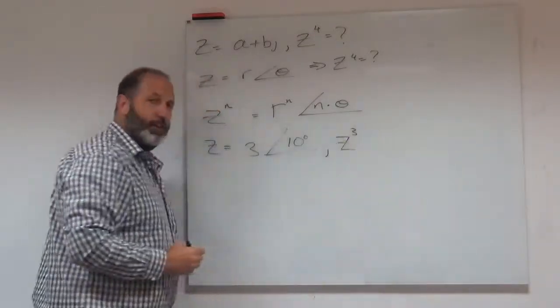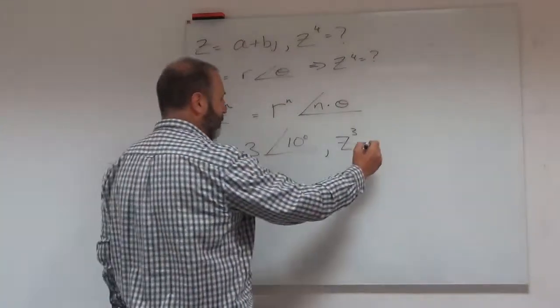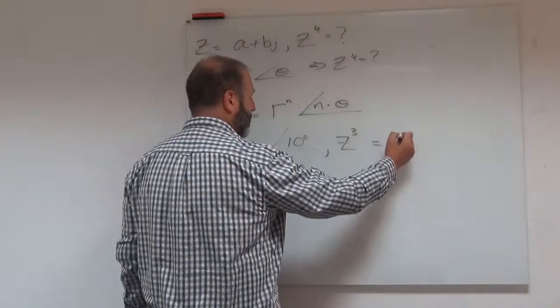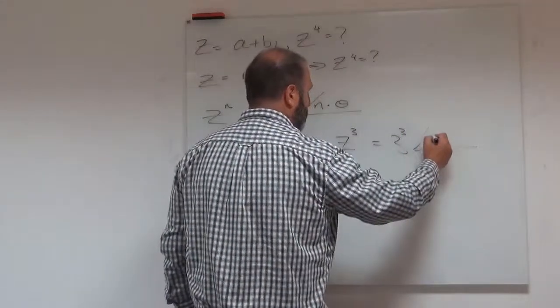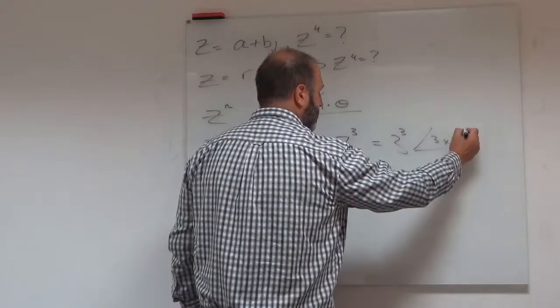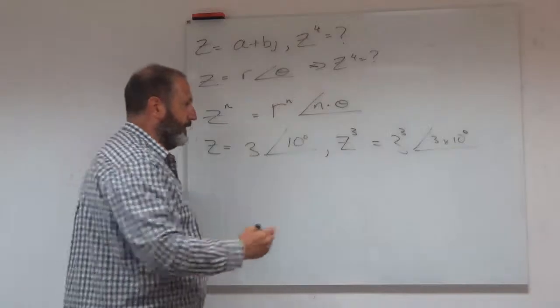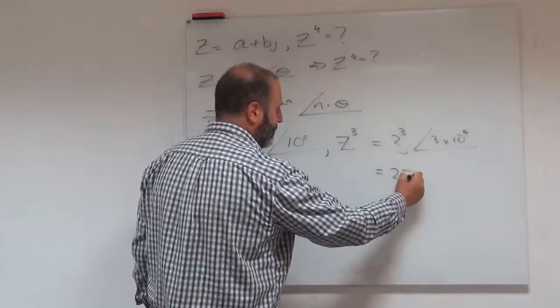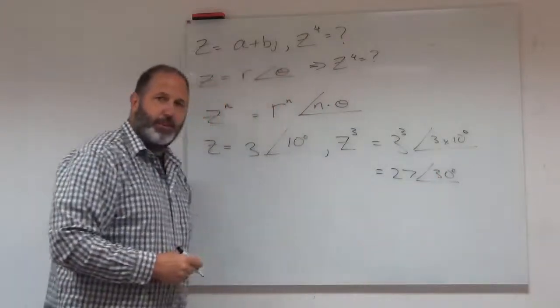If I wanted then to find z to the, well let's go with z cubed, which would take quite a while in this form. I should be able to say it's just 3 cubed and my new angle will be 3 times 10 degrees. So 3 cubed is going to give me 27. So my answer would be 27 and 30 degrees.